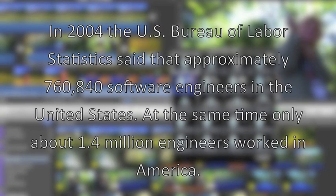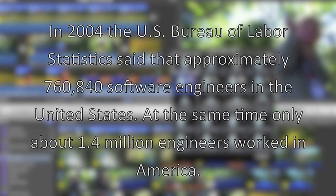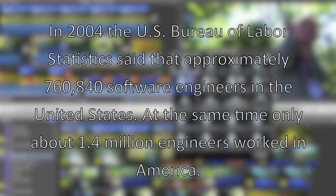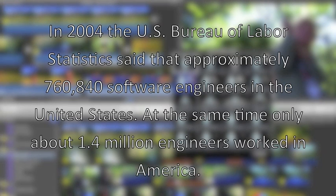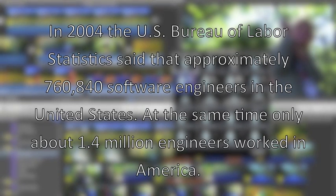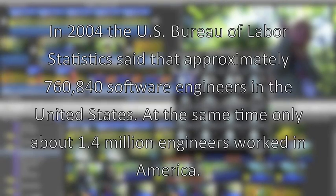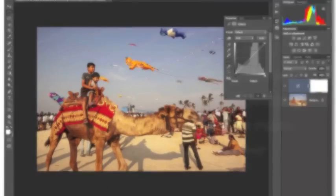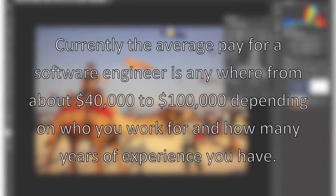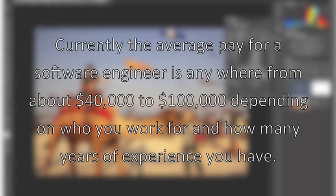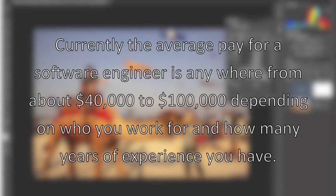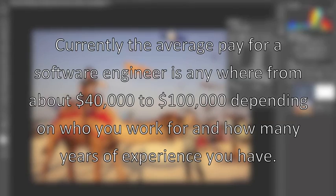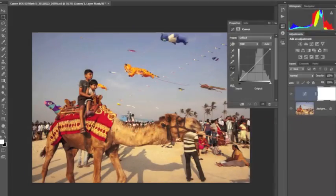In 2004, the US Bureau of Labor Statistics reported approximately 760,840 software engineers in the United States. At the same time, only about 1.4 million engineers worked in America. Currently, the average pay for a software engineer is anywhere from about $40,000 to $100,000, depending on who you work for and how many years of experience you have.